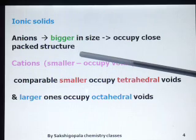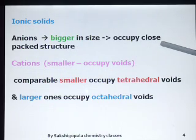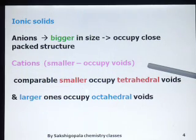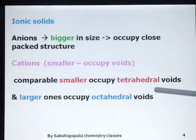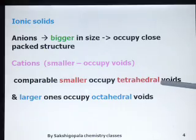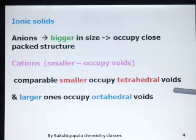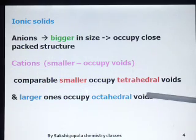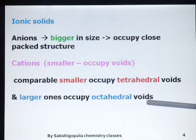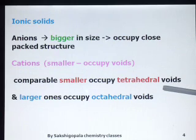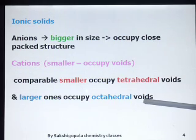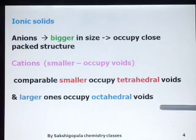Anions, which are bigger in size, occupy a close-packed structure in the lattice. Cations are smaller, so they occupy voids. When we are speaking about cations which are comparably smaller, they occupy the tetrahedral void. In our previous video class we learnt that tetrahedral voids are smaller than the octahedral void. So the smaller cations occupy tetrahedral void and the larger cations occupy the octahedral void.